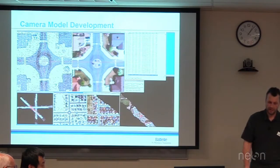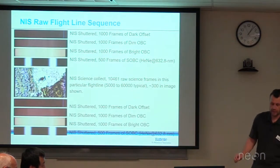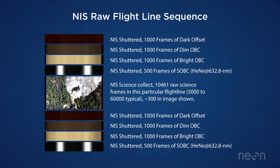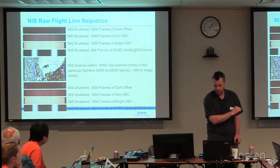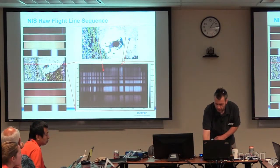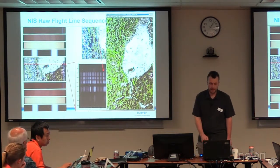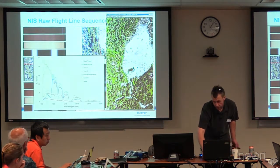This is our typical flight line collect. I want to re-emphasize that we use this data in our processing workflow, and it's vital that it's collected before and after every flight line so we understand the changes of the sensor from the lab out to when we're doing the science collects. We have both an image frame and a processed radiance image that comes from that raw data set with associated spectra.